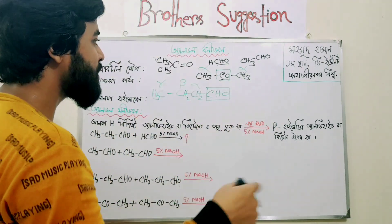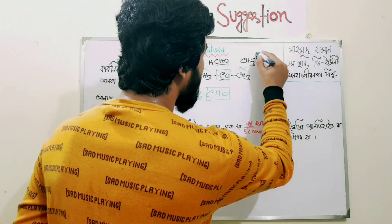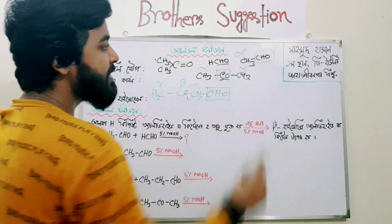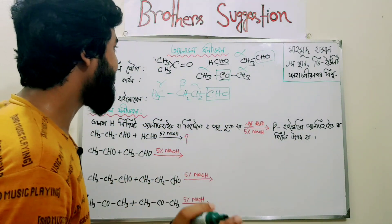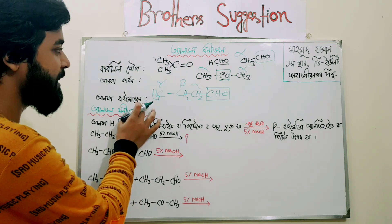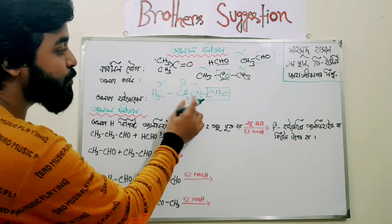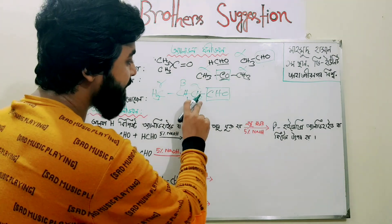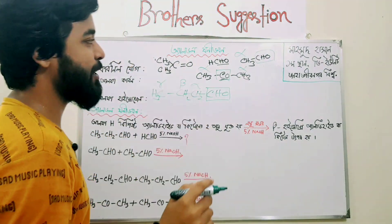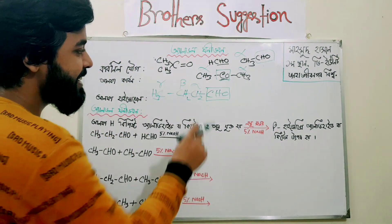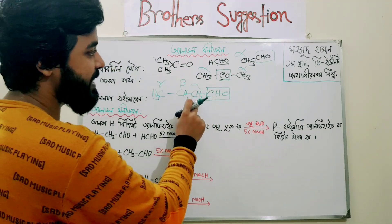The carbonyl carbon is the same as the carbonyl carbon. This is the carbonyl carbon. Now we have alpha carbon, so we have alpha hydrogen on the alpha carbon.